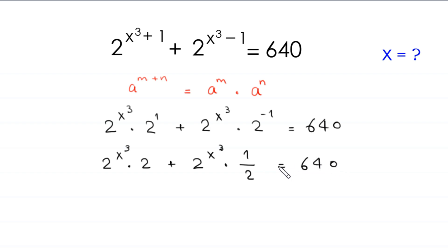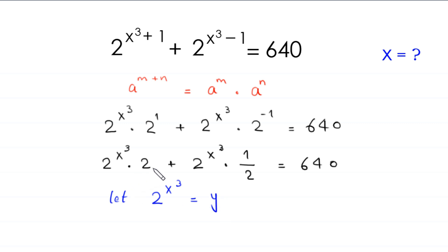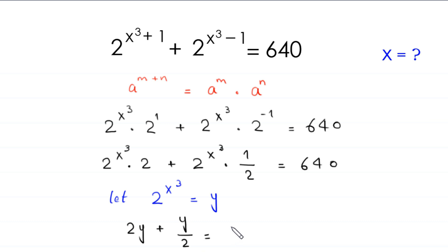Now we suppose that 2 to the power x³ is equal to y. So this equation will become 2y plus y over 2 is equal to 640.